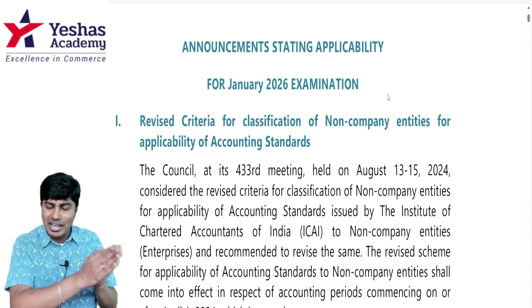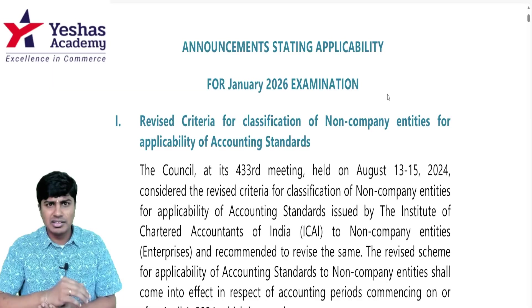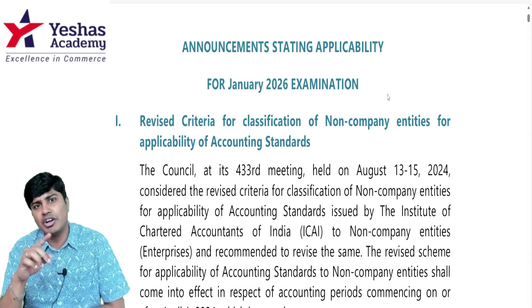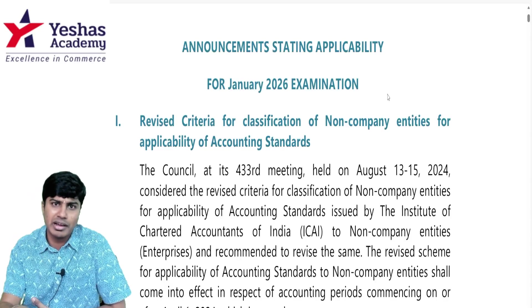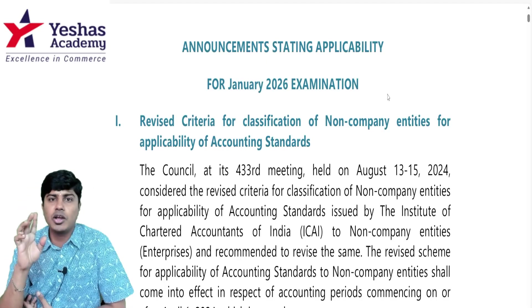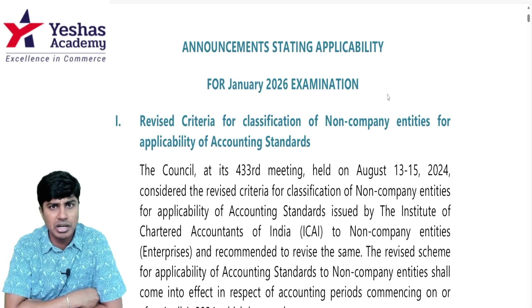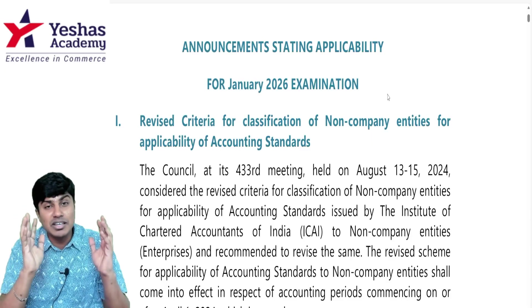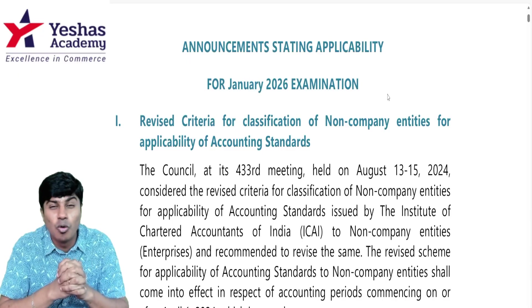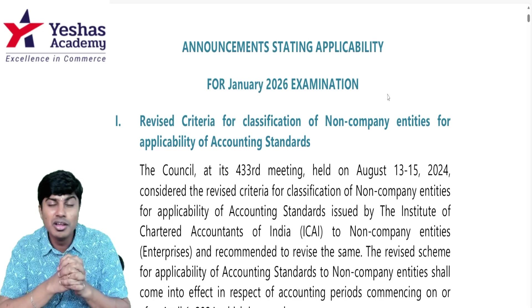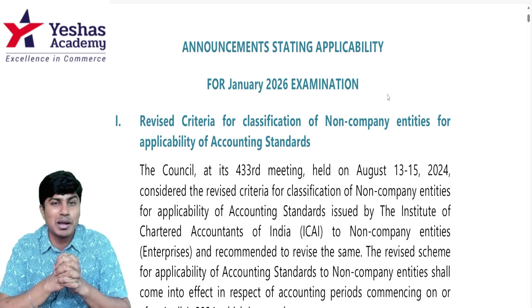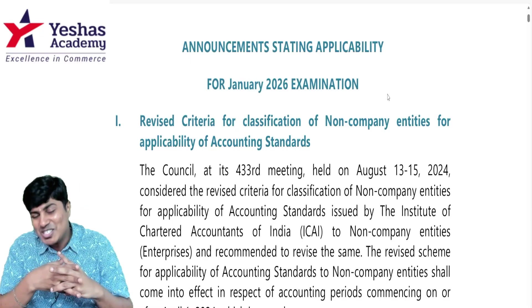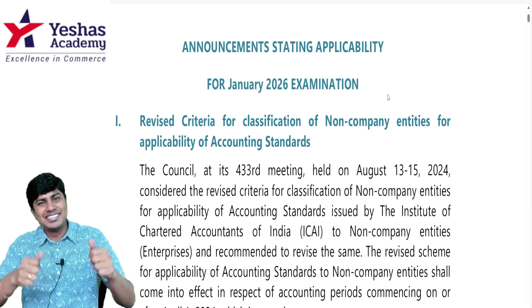It is now only two categories: large entities and MSMEs. I hope you have done that — that amendment was applicable for the September 2025 attempt also. There is another video uploaded on that in the same YouTube channel. I will put the iCard here — you can click on it or see in the description. I hope your preparations have gone well so far and will go really well beyond this point. Wishing you all great success in the upcoming examination. See you all on the other side — till then, stay in the game.